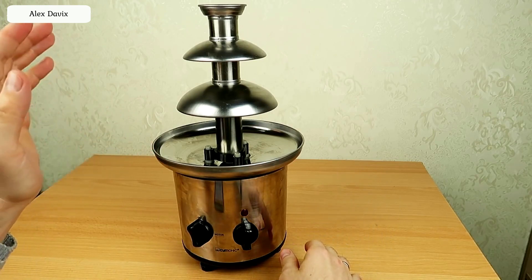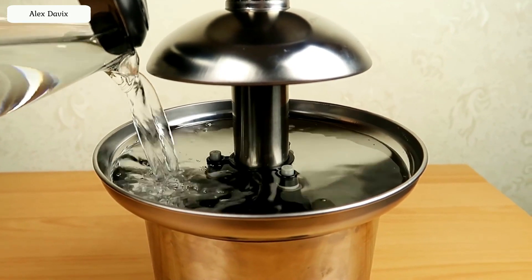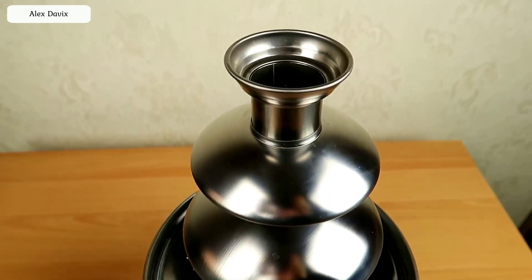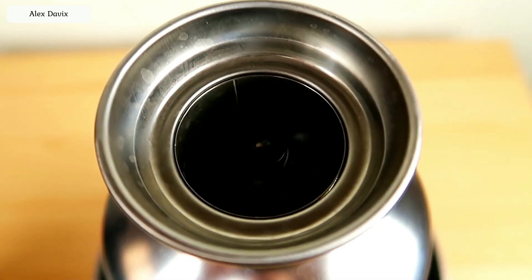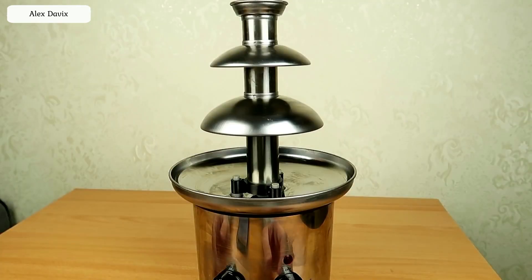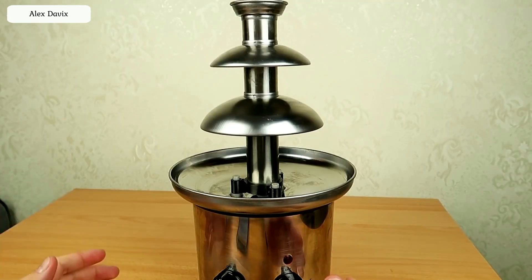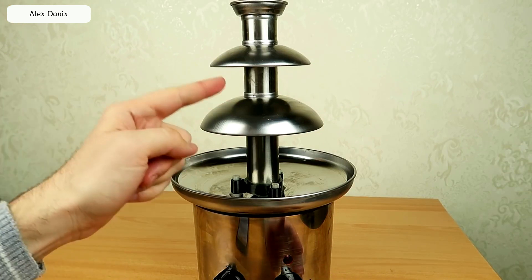I decided to check what if you pour into this fountain something that is not chocolate but something else? For example, to fill there with plain water. The fountain will not work. Look, the screw turns in circles. You need something more viscous than water. What if you pour into the chocolate fountain a non-Newtonian liquid? Will we get a fountain or not? We will check it now.